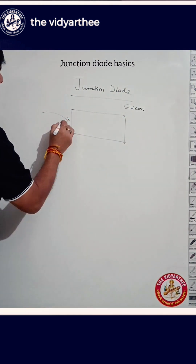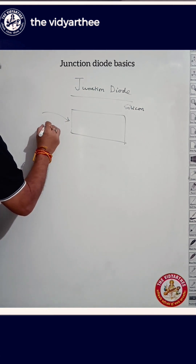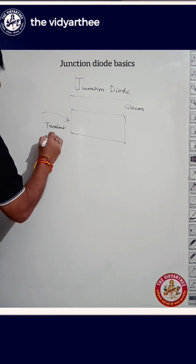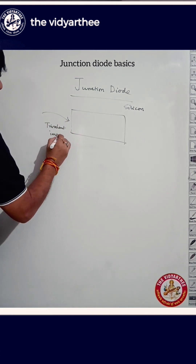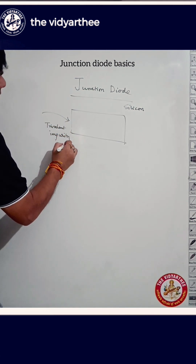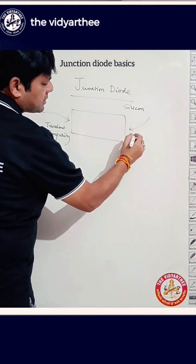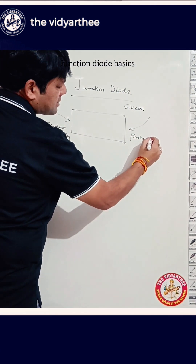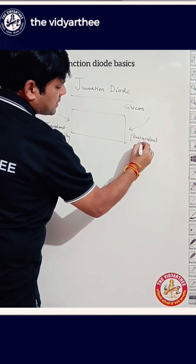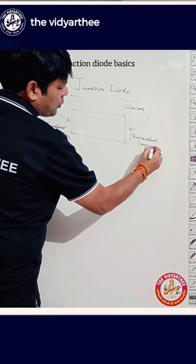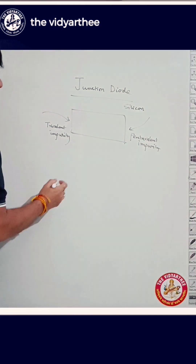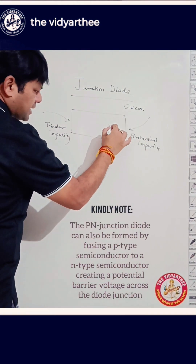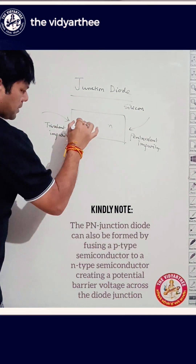From one end, I will add trivalent impurity, trivalent impurity. And from the other end, I will add pentavalent impurity. So we are doping it, and what happens? This will become P-type and this will become N-type.